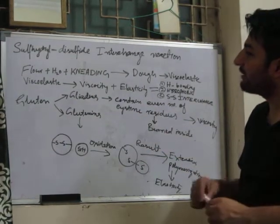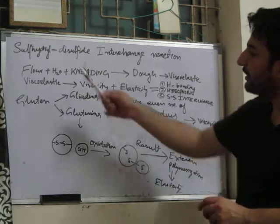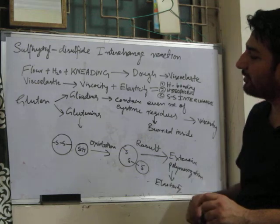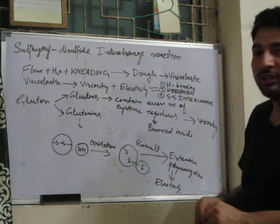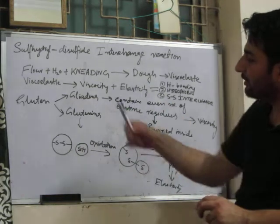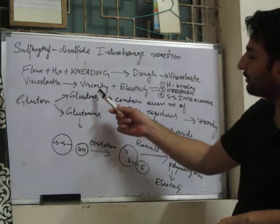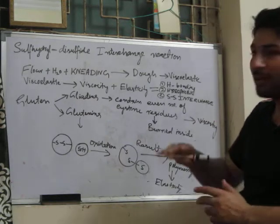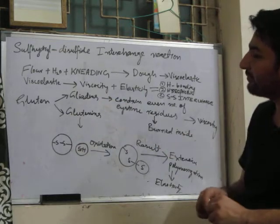What are sulphide disulphide interchange reactions? This reaction occurs in dough. When flour is added with water and is kneaded, we achieve dough which is viscoelastic in nature. Viscoelastic means the substance has both viscosity and elasticity. Because of different types of reactions, the substance becomes viscoelastic.